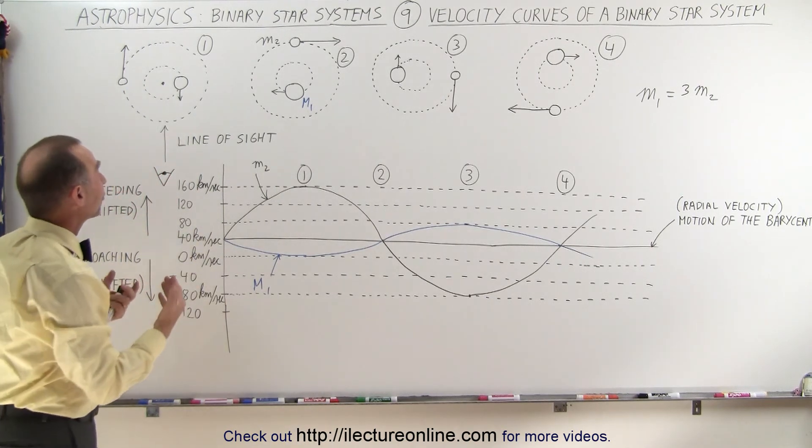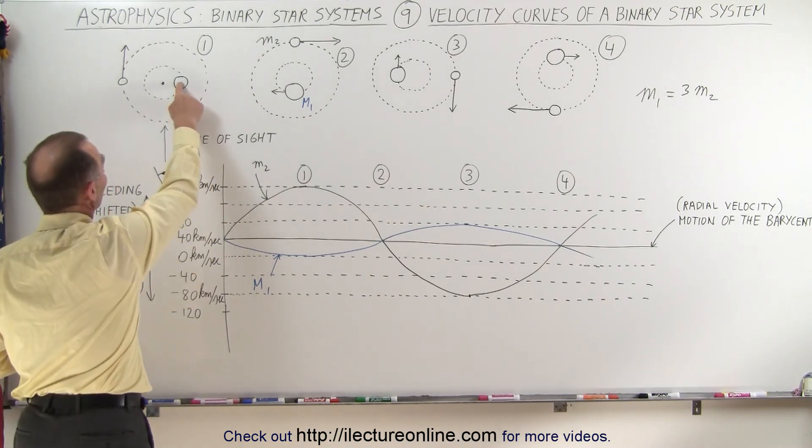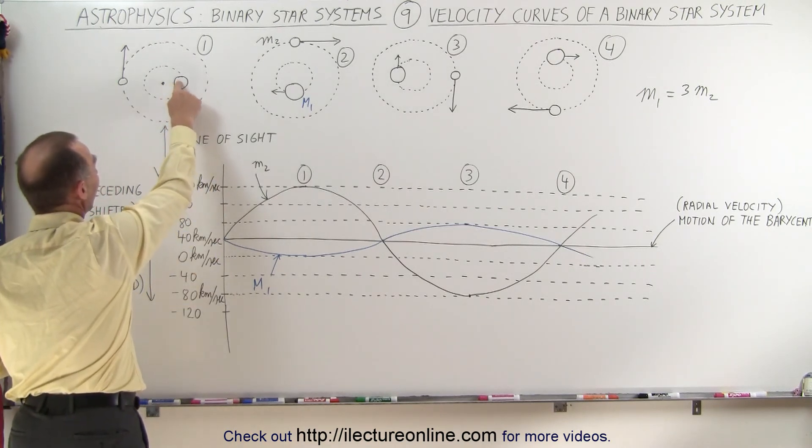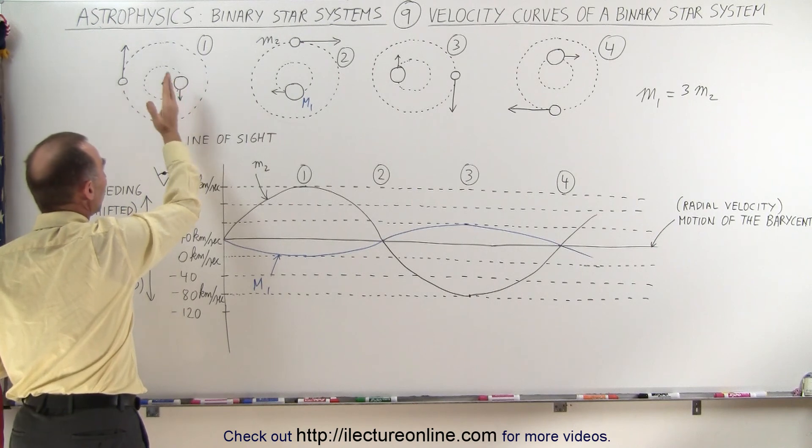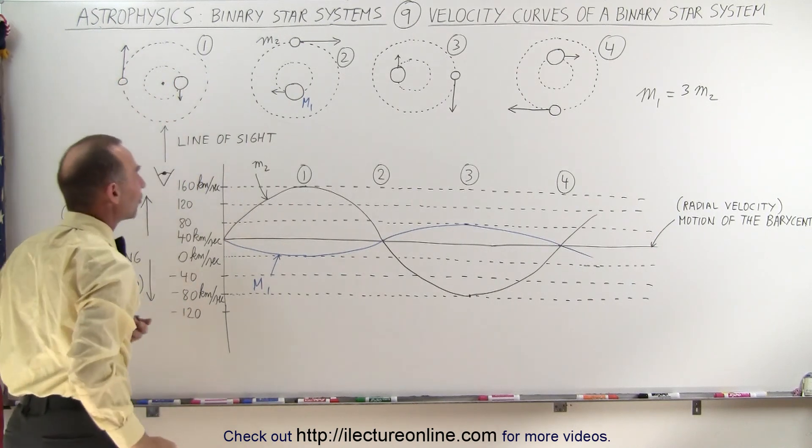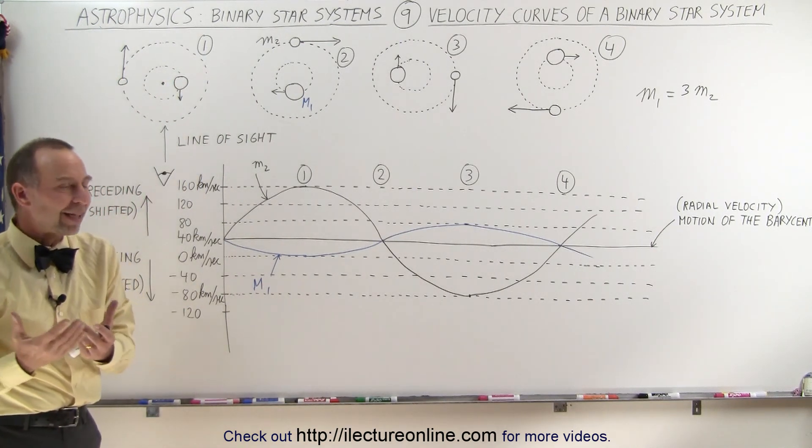And likewise, we would expect, since this is only one-third the distance, that the velocity of the large object would only be one-third the velocity of the small object.